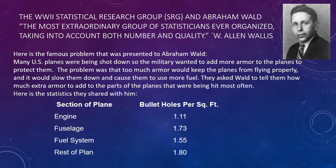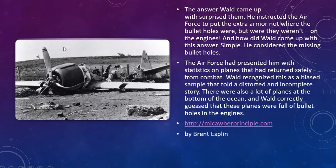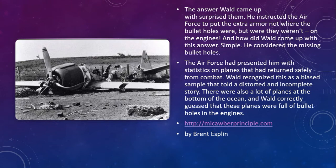You can see the engine was getting 1.11 bullet holes per square foot, the fuselage 1.73, the fuel system 1.55, and so forth. He was given the problem of: we can only add so much armor — how do we decide where to add it to protect the plane? Well, this information was gathered from planes that had managed to return from the war.